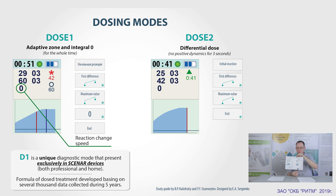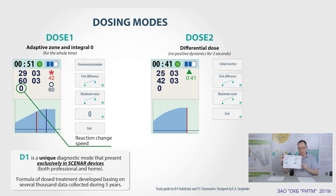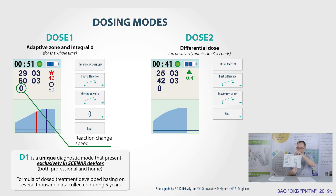Dose 2 — Differential Dose. The difference from D1 is that here the dose signal indicates the absence of reaction change during 3 seconds, meaning that the active dialogue between the device and the skin is over and there is no dynamics. In this mode, the symbol of dose is the green triangle. We can also see the value of reaction when it was reached and the vertical line on the graph that indicates it.